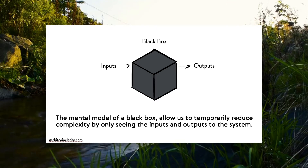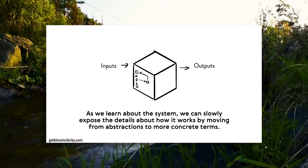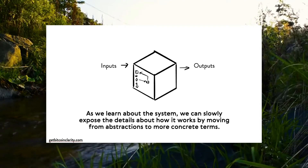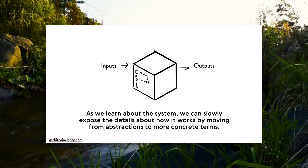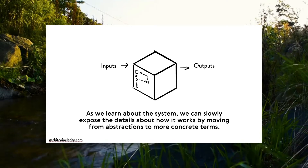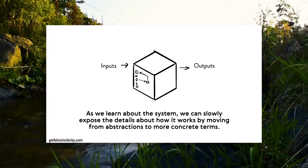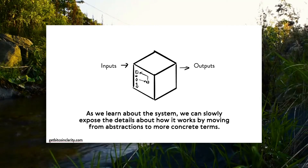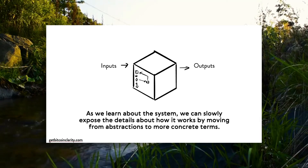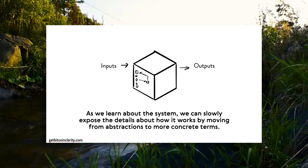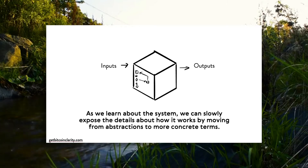Focusing on inputs and outputs helps us understand the role of a particular gear. As we move forward and learn more about the system, we can slowly expose more detail and show how what we were talking about in abstract terms becomes more concrete. For example, when I first talk about mining, I'll discuss high-level aspects — what is the purpose of mining, why do we need it. Then as we get a higher resolution, I'll talk about hash functions. Abstractions help us simplify the world first, and then we move into more concrete terms.